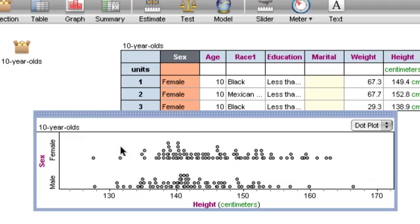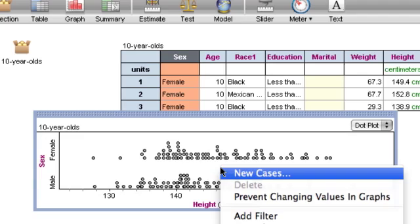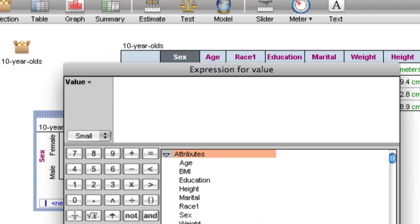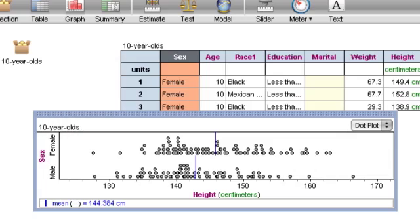Now, when we look at this, it's not obvious that the girls might be taller than the boys because these distributions overlap quite a bit. So I'm going to use plot value. I'm going to put the mean right on the graph. And now you can see that the girls, on average, are in fact taller than the boys.